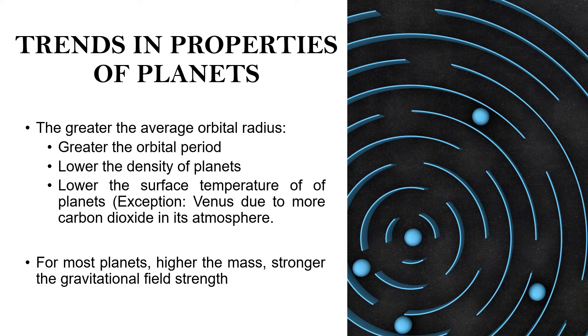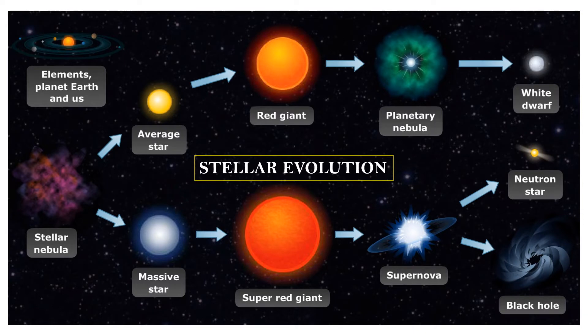For most planets, the higher the mass, the stronger its gravitational field strength. Stellar evolution is the life cycle of stars. Stars initially form from a nebula, which is a hydrogen-containing interstellar cloud of dust and gas.